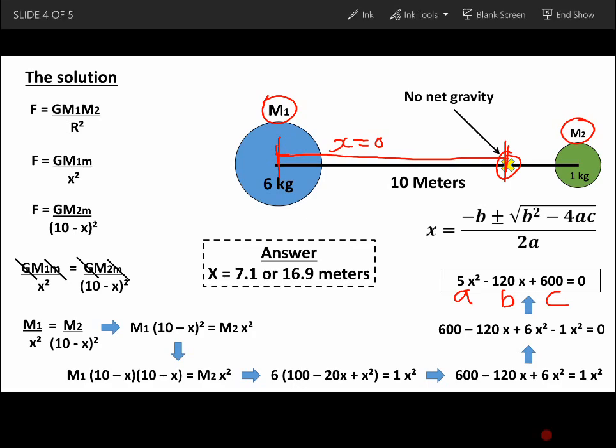Well, obviously our answer will be X equals 7.1, as we only have a distance of 10 meters. So 16.9 meters is technically another place where there is no net gravity.